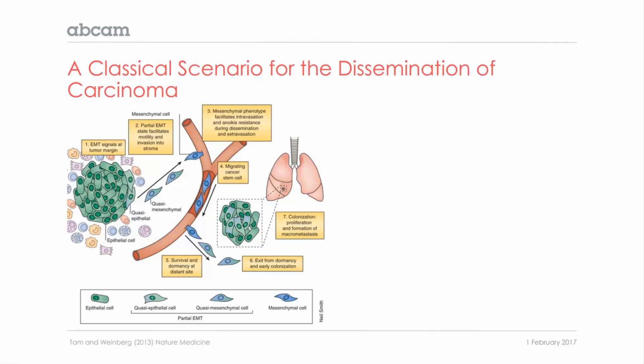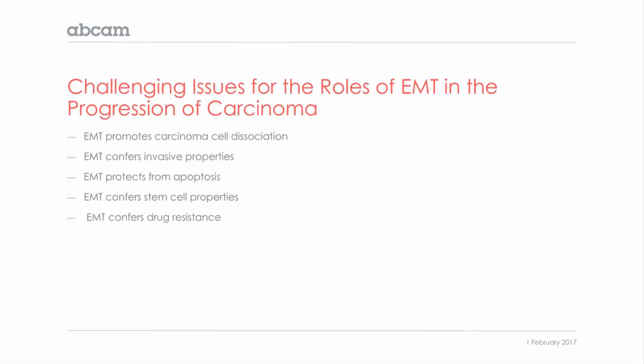At the secondary site, they engage into the reverse process, MET, to re-engage the proliferative aspects of these cells. We have been looking at all these processes in animal models, and in humans obviously you cannot observe all these aspects live because you cannot put a micro camera. However, we've been looking at circulating tumor cells, and what we have demonstrated so far is that these circulating tumor cells are often in an EMT-like phenotype compared to the primary tumor — an important notion for tumor progression.